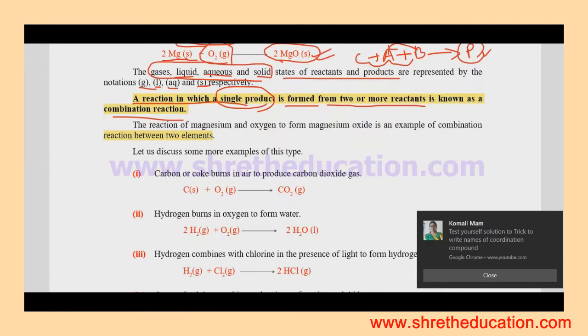This is a combination reaction between two elements. It's a combination in pure form where the substance has only one component.